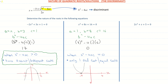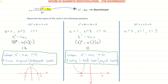Looking at our third example: 2x squared plus x plus 5 equals 0. That tells us a is 2, b is the number in front of x which is 1, and c is positive 5. The question is asking us to determine the nature of the roots, so we focus on the discriminant, b squared minus 4ac. Subbing in the values — b is 1, so 1 squared, minus 4 times 2 times 5 — I evaluate that and I'm getting 1 minus 40, which is negative 39.